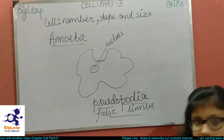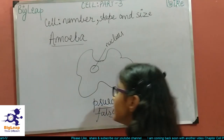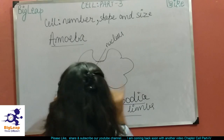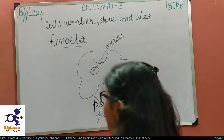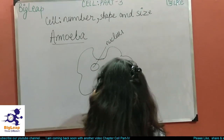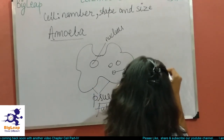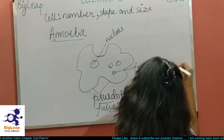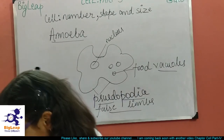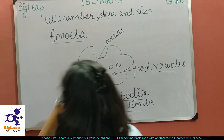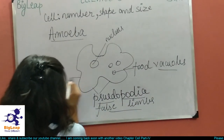Amoeba travels with the help of pseudopodia. Pseudopodia means false limbs — 'pseudo' means false and 'podia' means limbs. These are the pseudopodia shown here. Amoeba also has many vacuoles; I'm talking specifically about food vacuoles.